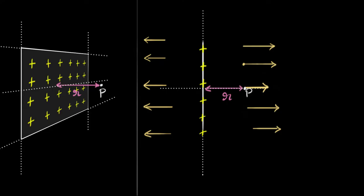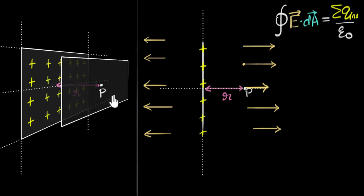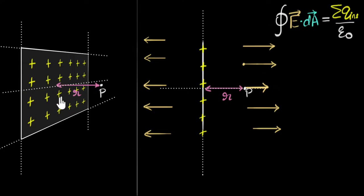Now the question is: knowing this, what kind of Gaussian surface would you choose to use Gauss's law? It should be a surface such that the integral becomes nice and easy. My first instinct is that whatever surface I choose needs to be flat in front of it or behind it, because parallel surfaces will have the same electric field all over them — we can use that to our advantage. The second thing is that whatever surface I choose, it needs to pass through the sheet so I can enclose some charge. Putting these two together, the surface we can choose is a cylinder.